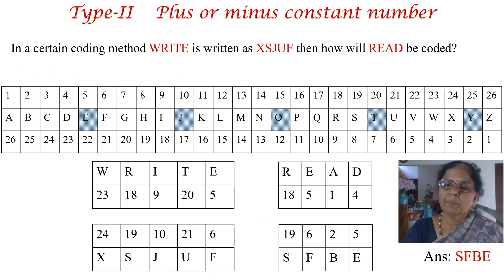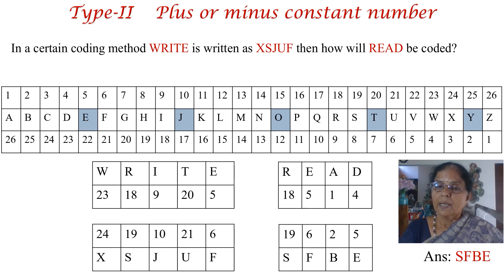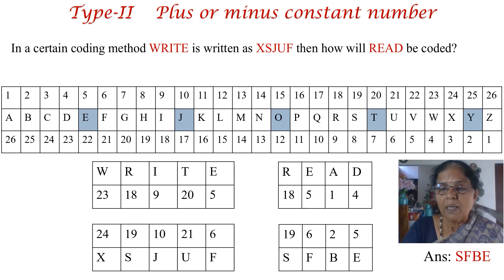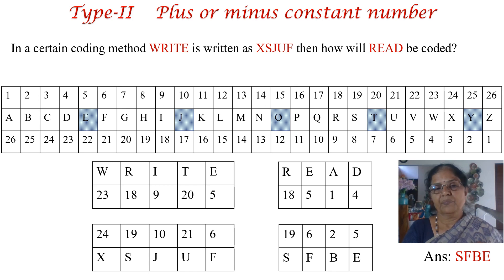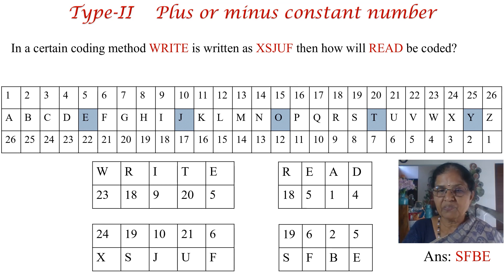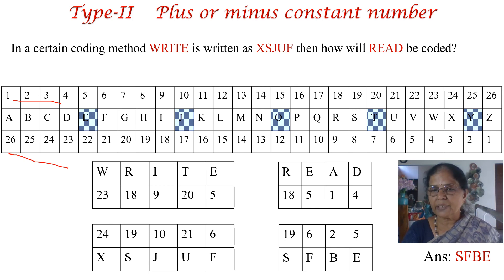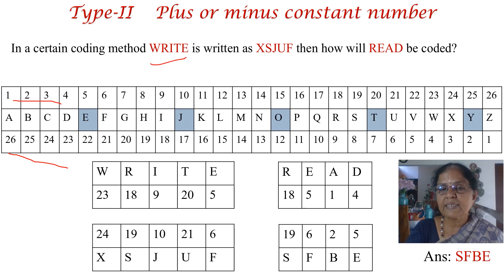This is the second type of question that may be asked in NET. This type involves adding or subtracting a constant number — the pattern is different from direct substitution. In this problem, we are going to make use of the number table. The question is: in a certain coding method, the word 'write' is written as XSJUF. How will the word 'read' be coded?